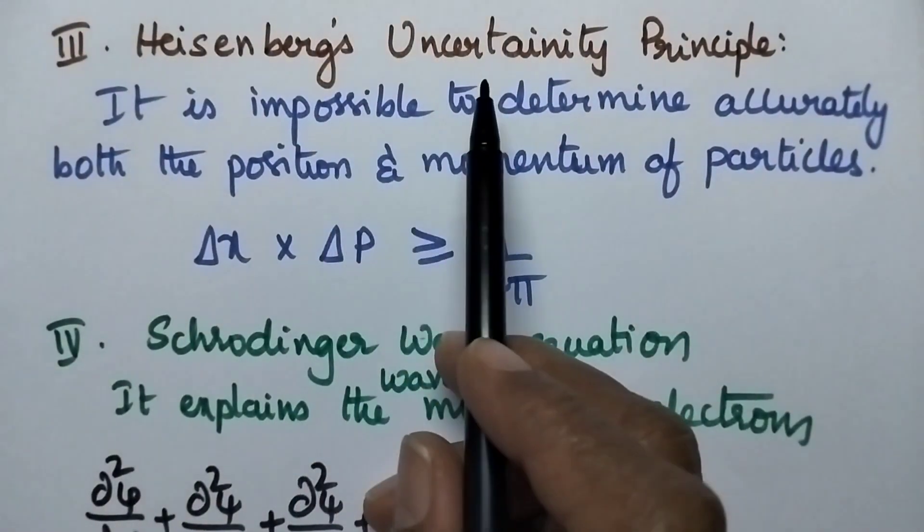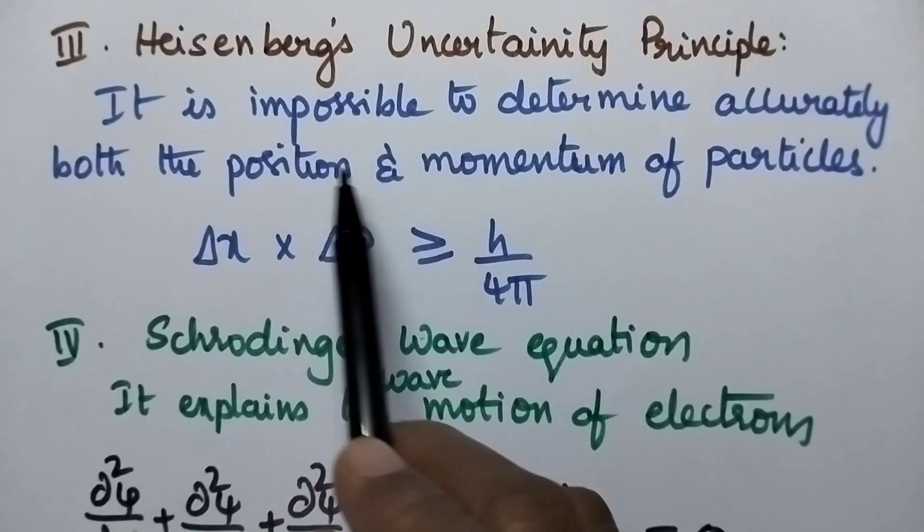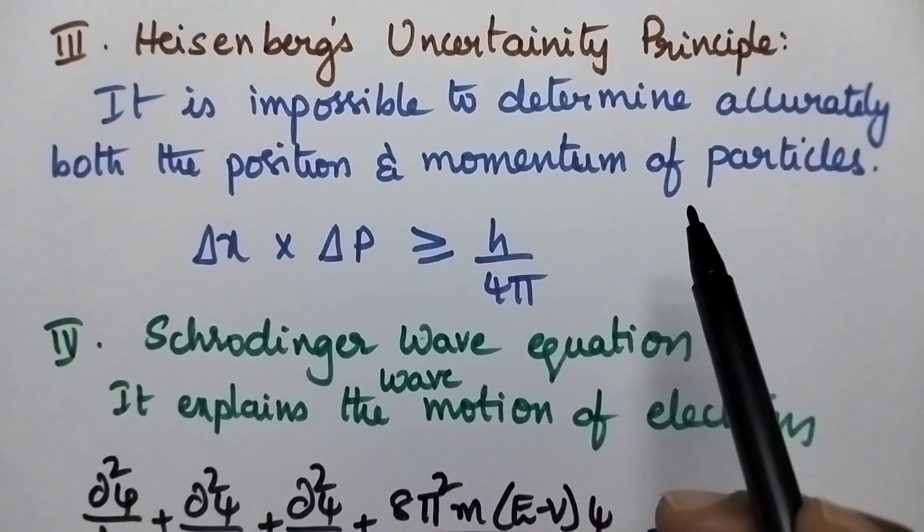Coming to Heisenberg's uncertainty principle, it is impossible to determine both the position and momentum of microscopic particles like electrons.